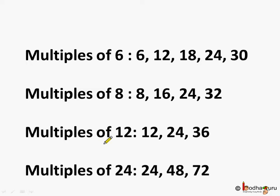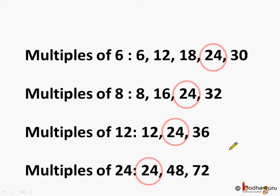And what are the multiples of 12? 12, 24, 36. And the multiples of 24 are 24, 48, 72. Now, which is the least common multiple of all of these? Well, it is 24. So, 24 is the LCM of 6, 8, 12, and 24.